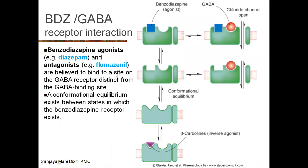Flumazenil is the antagonist of benzodiazepines. Beta-carbolines are inverse agonists — DMCM being one example. As inverse agonists, even in the presence of GABA binding to GABA-A receptors, the effect of GABA is reversed. Therefore beta-carbolines are inverse agonists at the benzodiazepine receptor, and flumazenil is the competitive antagonist at the same receptor site.